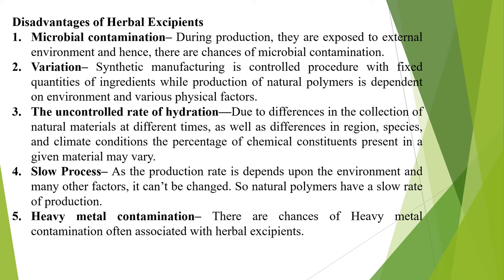Uncontrolled hydration: due to differences in collection of natural materials at different times, seasons, species, and climatic conditions, the percentage of chemical constituents in a given material may vary, leading to variable rates of hydration compared to synthetic materials. Slow process: the production rate is dependent upon environment and other factors, as all herbal products grow according to their geographical and climatic conditions, so natural polymers have a slow rate of production. Heavy metal contamination: there are chances of heavy metal contamination when associated with herbal excipients.